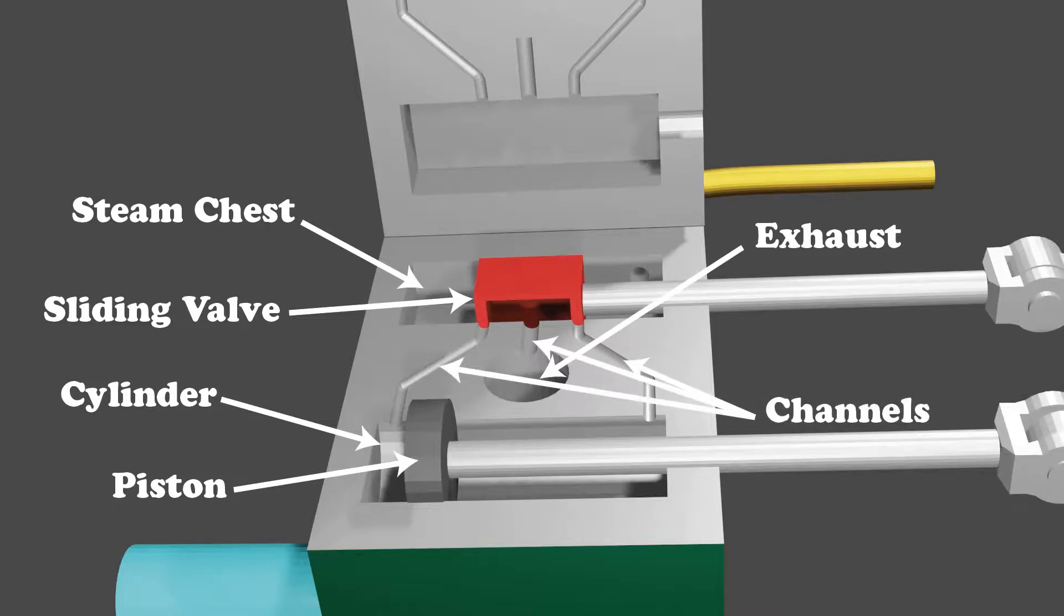The engine block contains channels to direct steam either from the steam chest to the cylinder or from the cylinder to the exhaust.